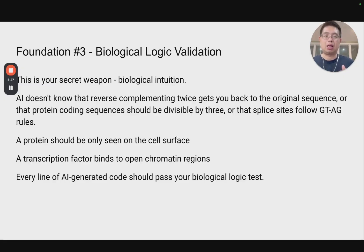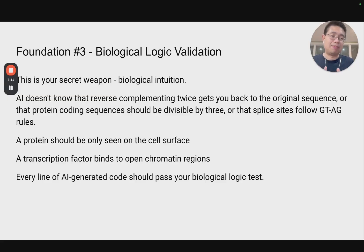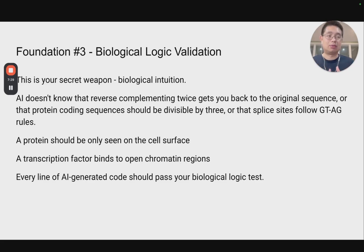Foundation number three: biological logic validation. This is your secret weapon, because you are a bioinformatician — you have the bio in your title, or as a computational biologist, you're a biologist. You need to understand the biology to begin with. For example, you can do reverse complement your DNA sequence — five prime to three prime, then three prime to five prime. Protein coding sequences need to be divisible by three, because three nucleotides correspond to one amino acid. Splicing sites should generally follow the GT-AG rule — 99% of the time — which the spliceosome recognizes. These are the basic biology knowledges you have to use to validate whether the results make biological sense.